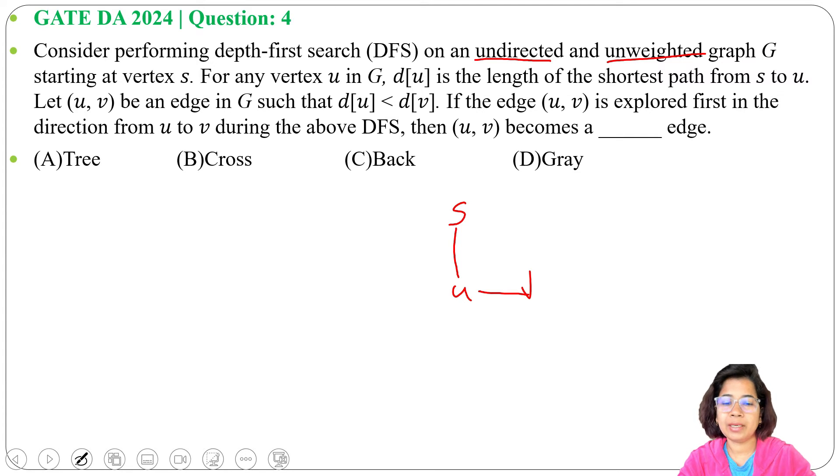If we will create a DFS tree, so from S we will visit U, from U we will visit V. Then (u, v) becomes a tree edge. This is a tree edge.